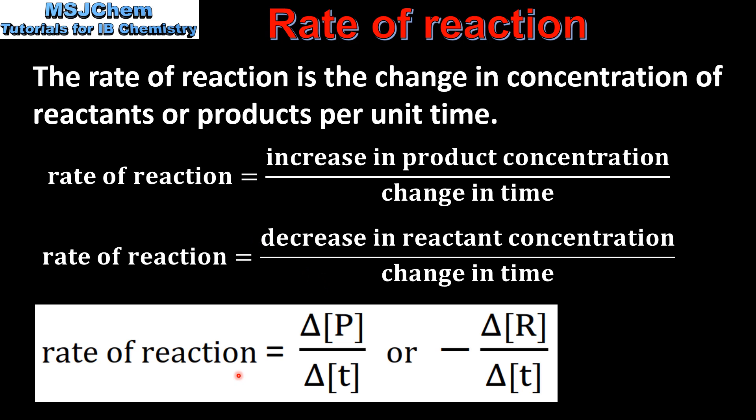The rate of reaction can also be represented as the change in concentration of the products divided by the change in time or the negative change in the concentration of the reactants divided by the change in time. The negative sign means that the concentration of the reactants decreases as the reaction proceeds.